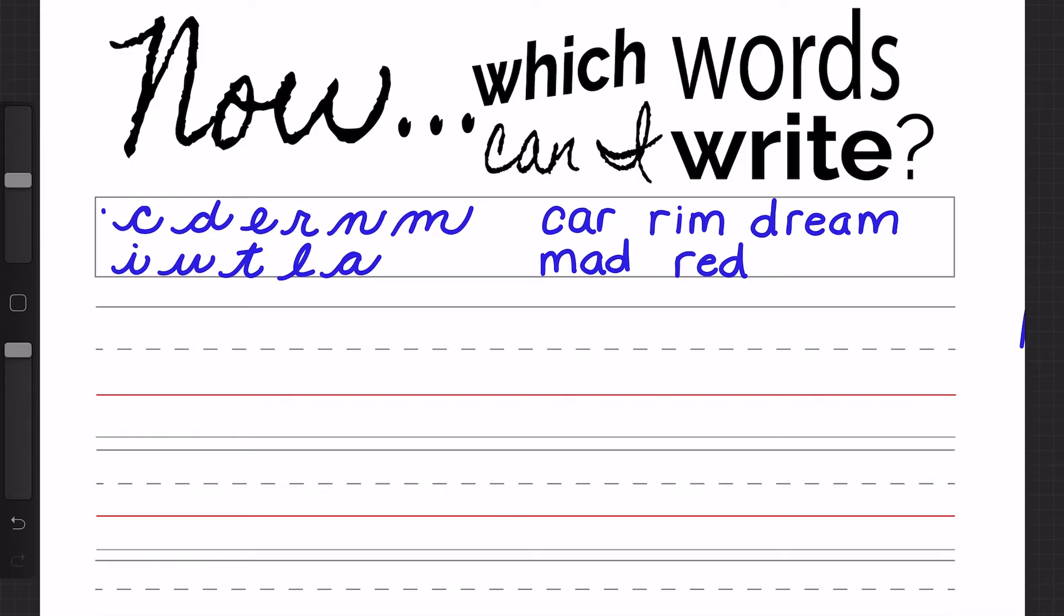Okay, let's begin on the middle line. This time you can start wherever you are comfortable, but I'm going to write the word 'car' like that, focusing on my slant, trying to get each letter to connect.